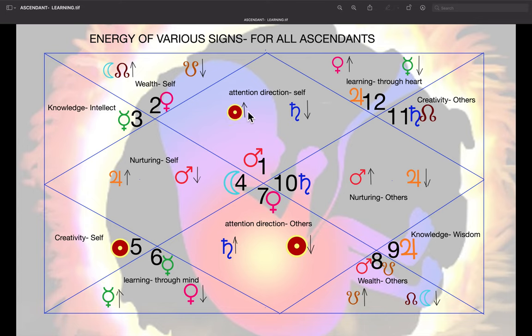We see here the exaltation-debilitation is reversed in opposite signs. For example, this is Aries and this is Libra. In Aries, the sun is exalted, Saturn is debilitated. In Libra, it is just the opposite. Saturn is exalted, the sun is debilitated. Notice the patterns here.